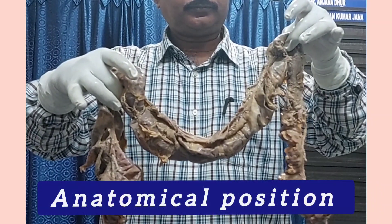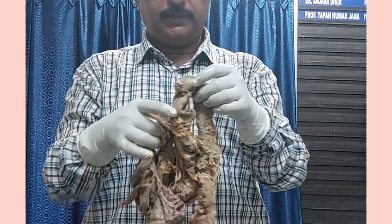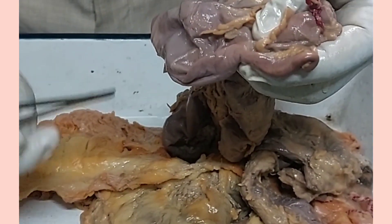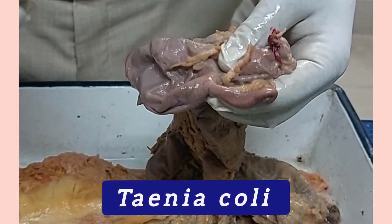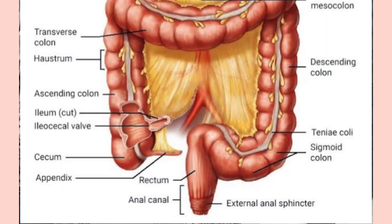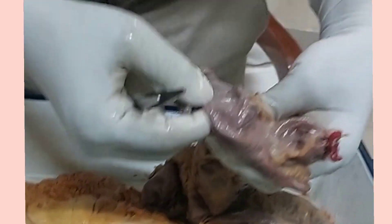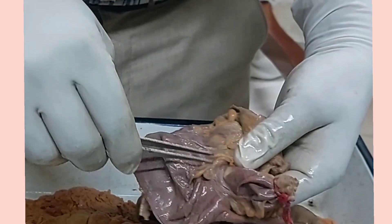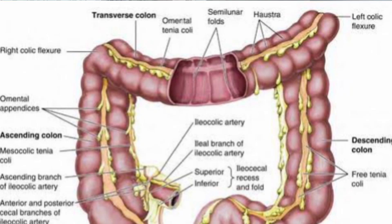Before demonstrating the anatomical position, you must identify that this is the large gut, not the small gut, as the large gut has three cardinal features. These are teniae coli, appendices epiploicae, and sacculation. All three cardinal features are absent in the rectum and anal canal. In the cecum also, you will not get appendices epiploicae and sacculation — they start above it. The sacculation and appendices epiploicae are more numerous and more prominent towards the distal part, that is, the distal part of the transverse colon and descending colon, and less prominent in the ascending colon and proximal transverse colon.